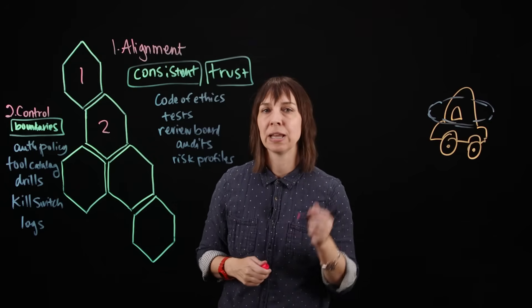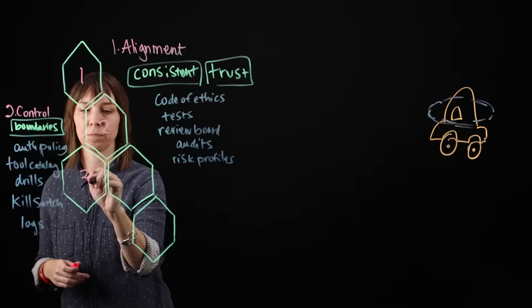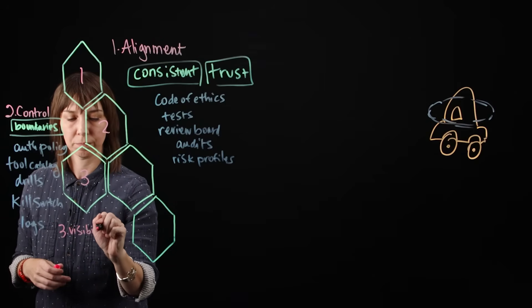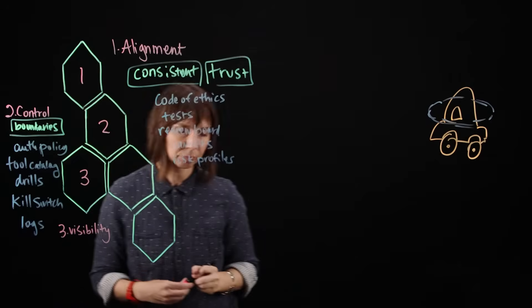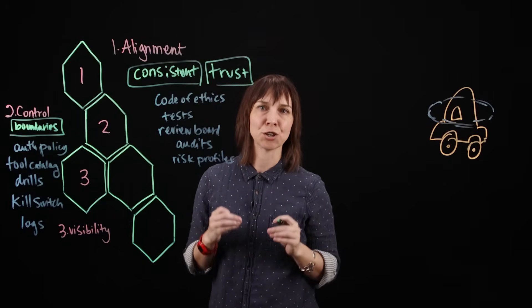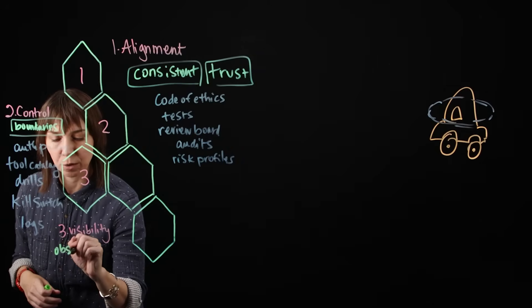Our third pillar is visibility. Visibility strategies make AI agents' actions observable and understandable.